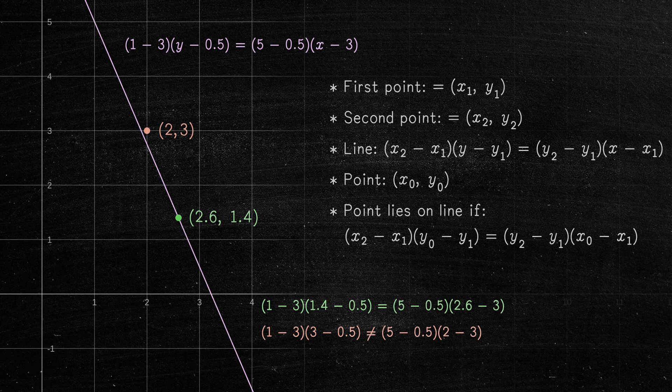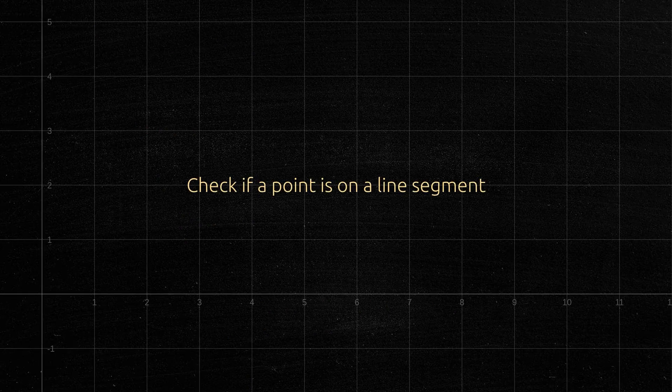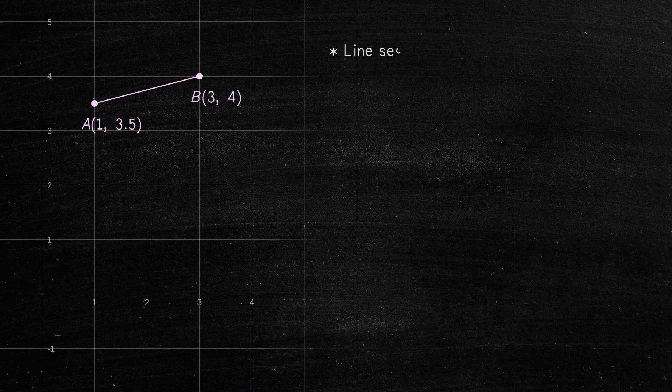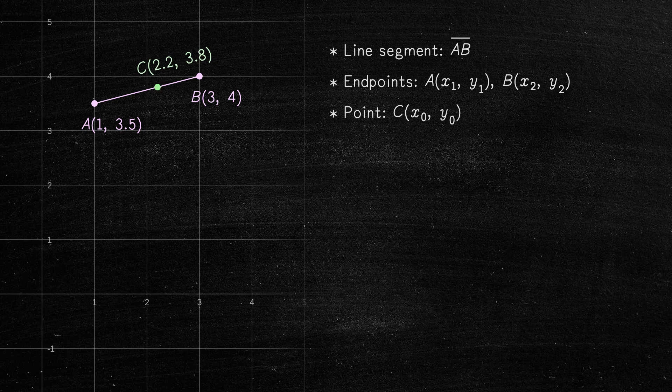Now that we know how to check if a point is on a line, there is a special case, checking if a given point lies on a line segment. Given a line segment AB, a point C lies on this line segment if and only if the distance between A and B is equal to the sum of the distances between A and C and between B and C.